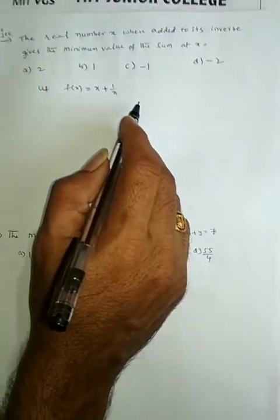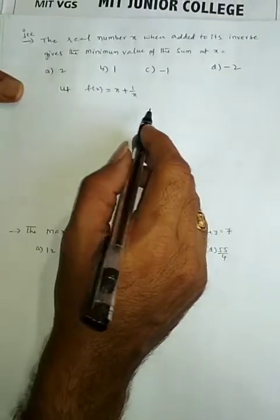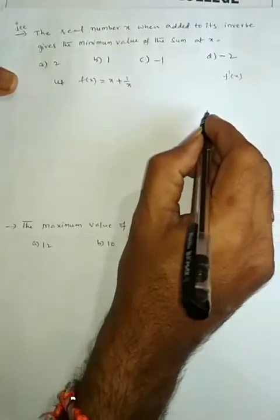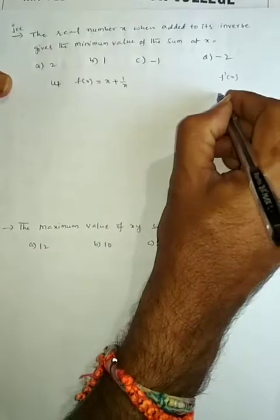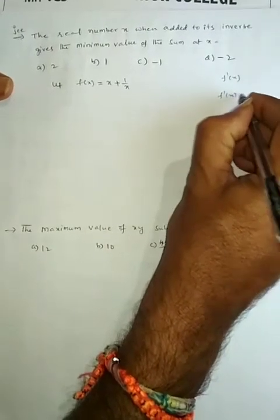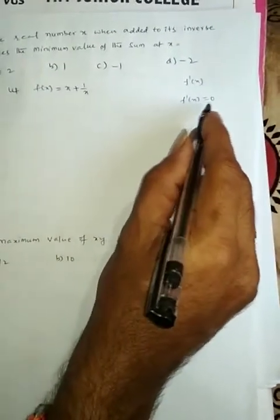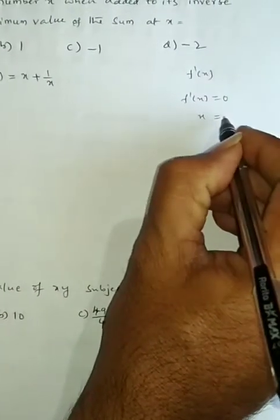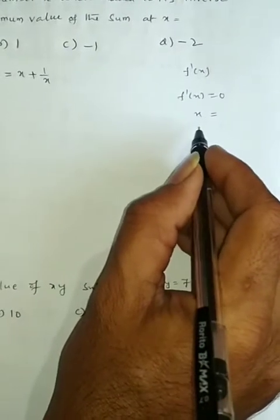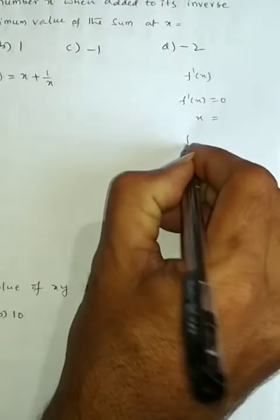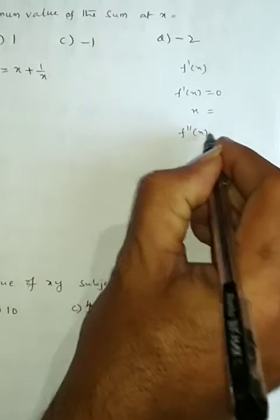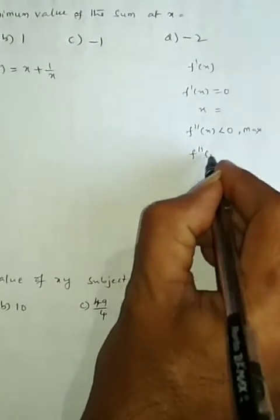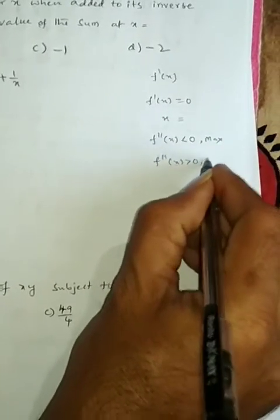Now, whether it is minimum or maximum depends upon the derivative. So first, find f'(x) — either maximum or minimum. Make f'(x) equal to 0. After getting the derivative equal to 0, you get the x values. Either maximum or minimum depends upon f''(x). If f''(x) is less than 0, it is a maximum value. If f''(x) is greater than 0, it is a minimum value.